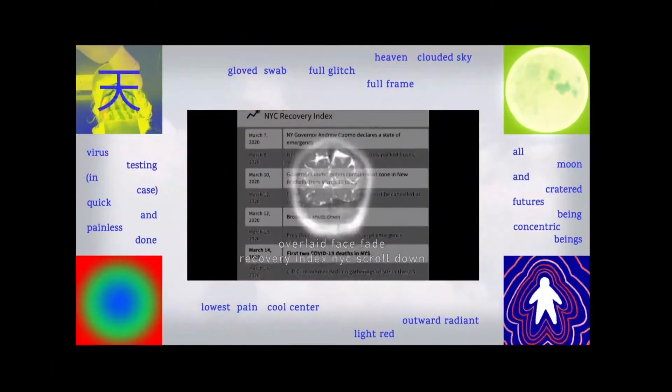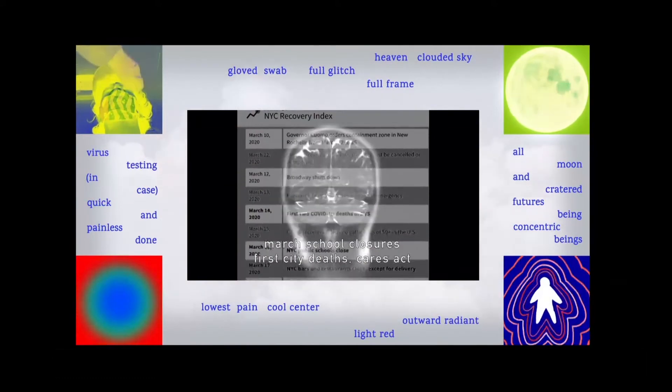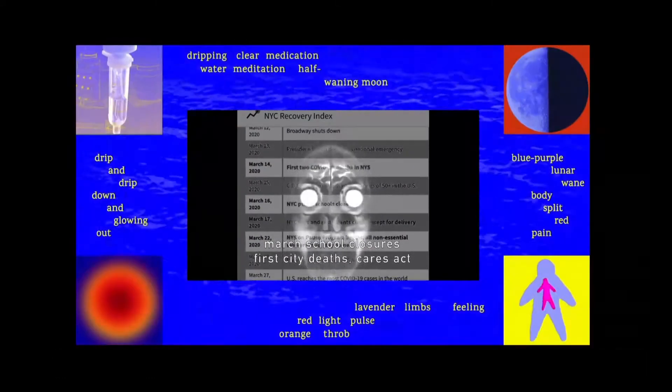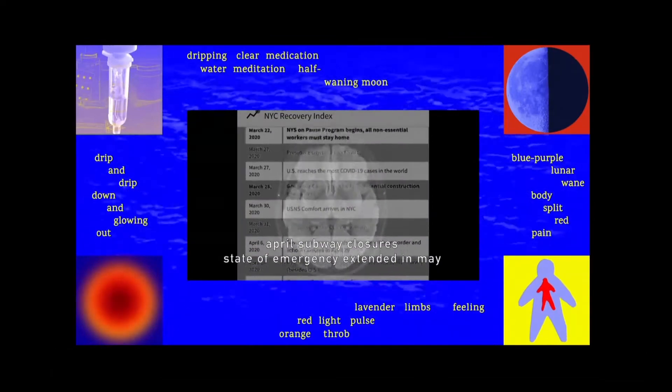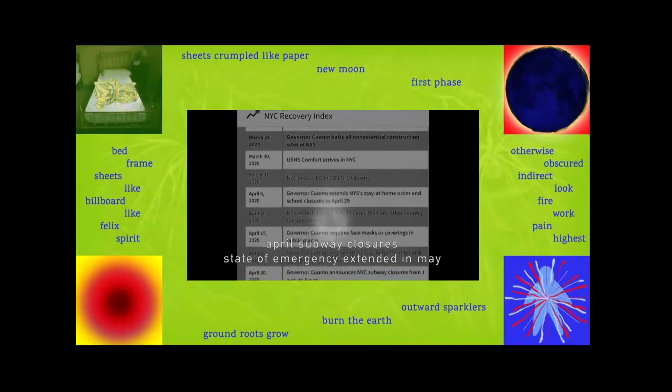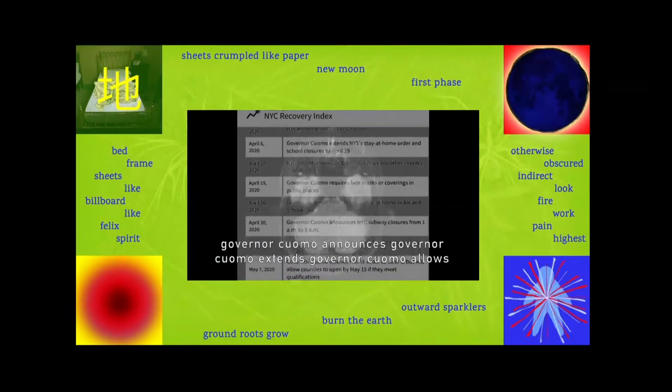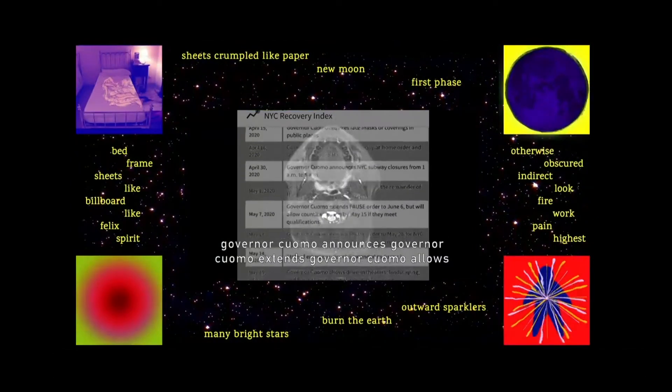Overlaid, face fade, recovery index, NYC, scroll down. March, school closures, first city deaths, CARES Act. April, subway closures, state of emergency extended in May. Governor Cuomo announces, Governor Cuomo extends, Governor Cuomo allows.